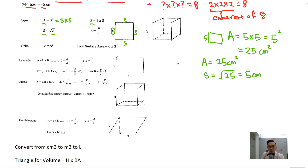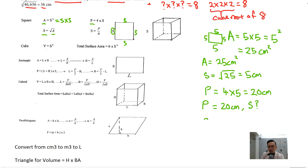The perimeter of a square is 4 times the side. So with side 5, perimeter equals 4 times 5 equals 20 cm. And if I give you the perimeter of a square equals 20 cm and ask what is the side, the side equals 20 divided by 4 equals 5 cm. So the side is the perimeter divided by 4.